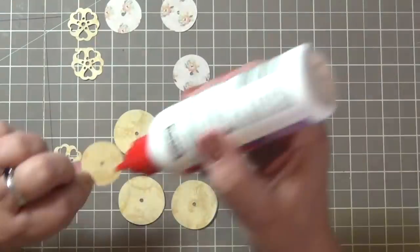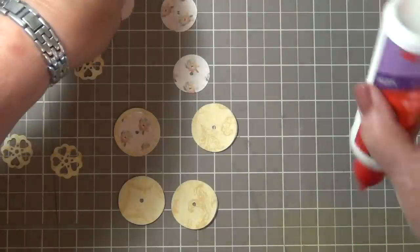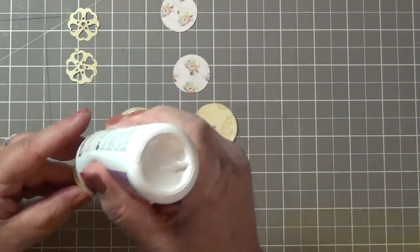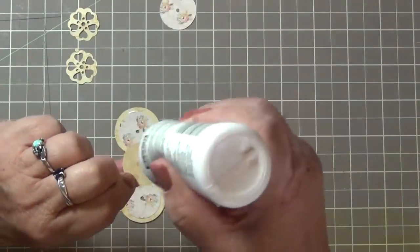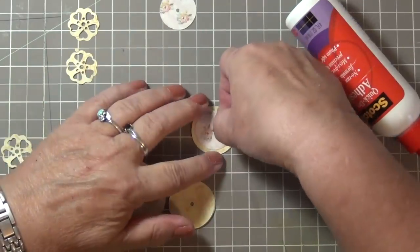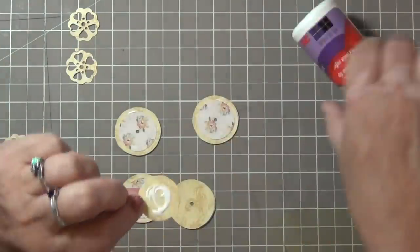Now these are the wheels of the buggy. I actually cut out eight of the large circles and glue two together for each wheel. And then I add the inner circle and the decorative die cut circle. I make sure that the centers are aligned by using the center hole as a guide.